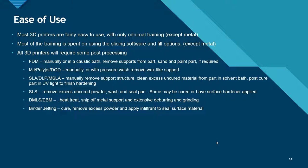With respect to ease of use, most 3D printers are fairly easy to use with only minimal training, except for metal. Most of the training is spent on using the slicing software and fill options. All 3D printers will require some post-processing. FDM typically requires manual removal or a caustic bath to remove support material, and these parts are often sanded and painted if required. MJ, PolyJet, and DOD require manual post-processing or a pressure washer to remove the wax-like support.